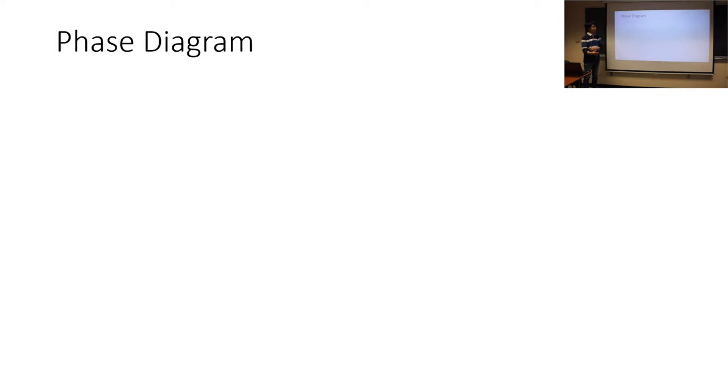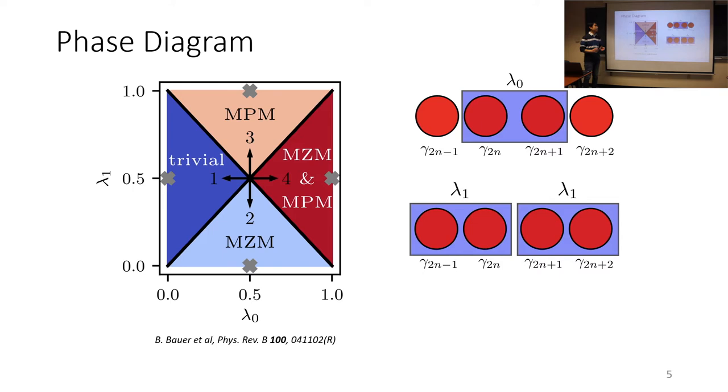So this model that we have, this binary model, has an associated phase diagram. To put names on the couplings, we say that lambda 0 represents the couplings between off-site Majoranas and lambda 1 represents the couplings on on-site Majoranas. And from that, we can put together a phase diagram which has four phases.